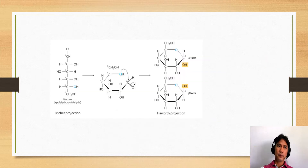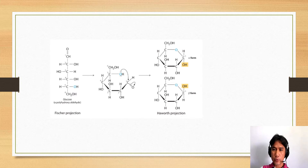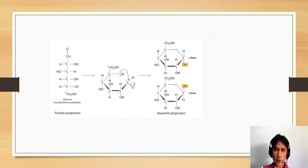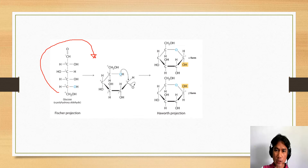In this slide, we will see how the Fischer projection is converted or transformed into the Haworth projection. Looking at this Fischer projection, what we have to do is to lift the molecule in a clockwise direction. As you notice, the fifth carbon will be right here, and above carbon number five is where carbon number six is. Carbon number four is right here, then three, two, and one.